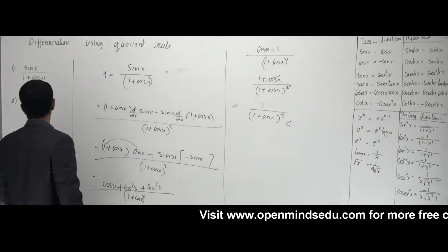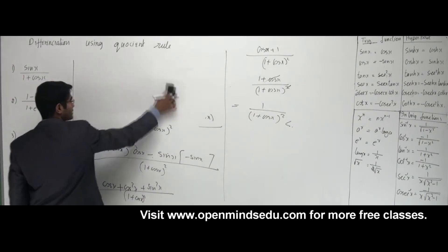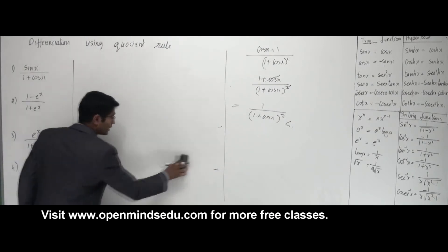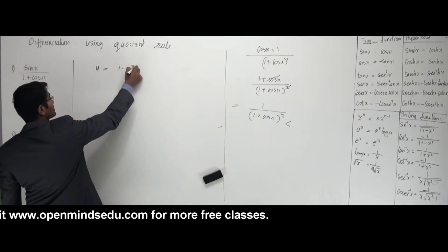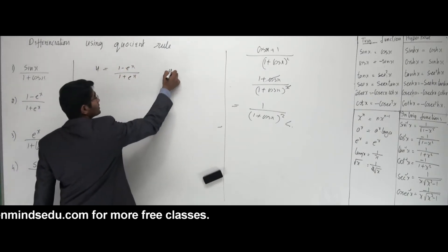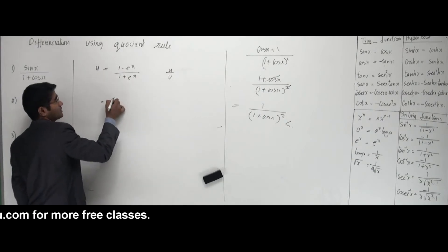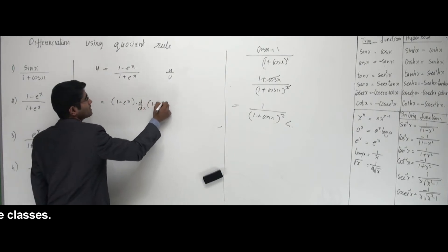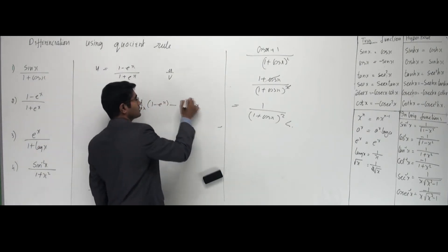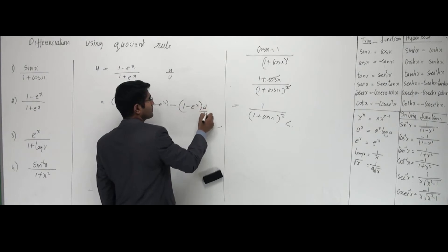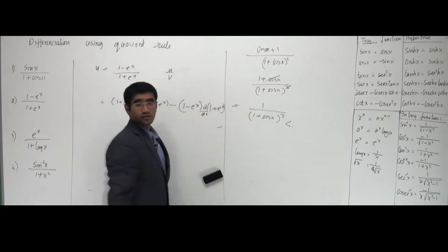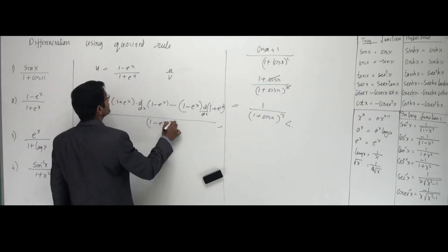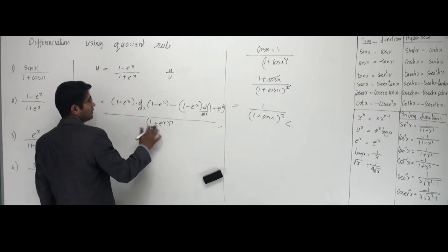Let's go with the next problem. It says 1 minus e to the x divided by 1 plus e to the x. I'd like you to stop the video and try to work this problem yourself. So: y equals 1 minus e to the x divided by 1 plus e to the x. Who is u and v? The numerator is u and the denominator is v. The formula goes like: v, that is 1 plus e to the x, into the differentiation of u, that is 1 minus e to the x, minus 1 minus e to the x into d/dx of 1 plus e to the x. The denominator is 1 plus e to the x.